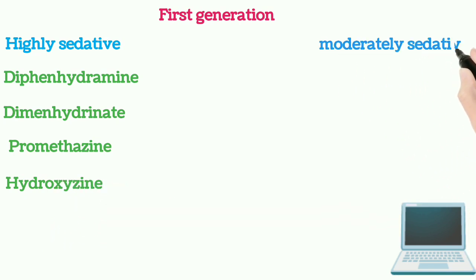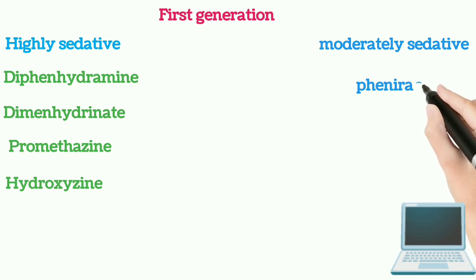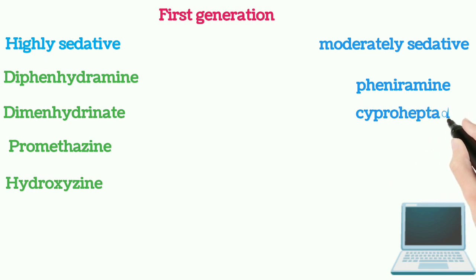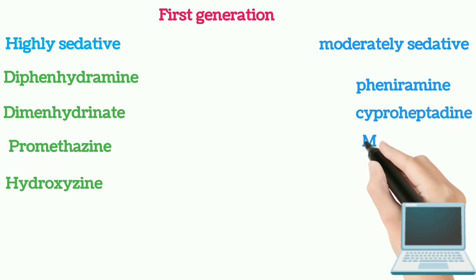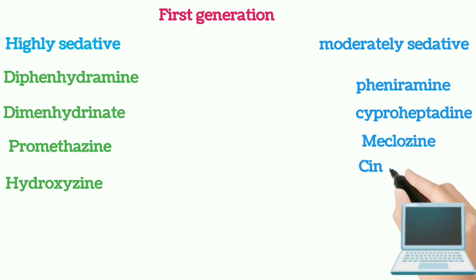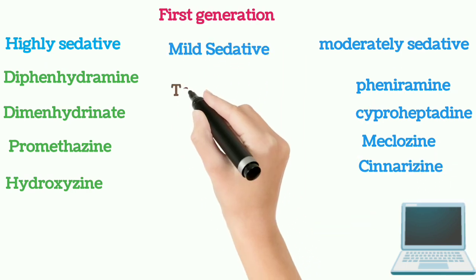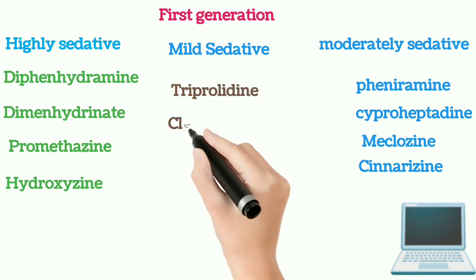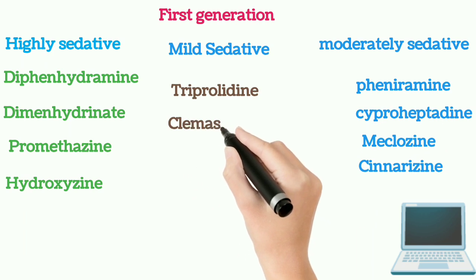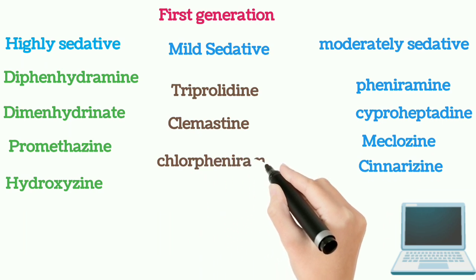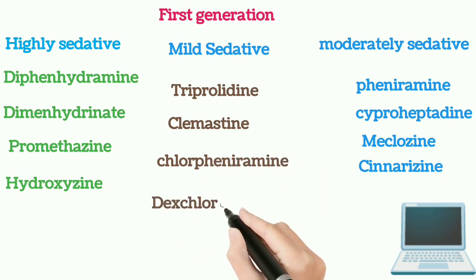1st generation moderately sedative antihistamines include pheniramine, cyproheptadine, meclizine, and cinnarizine. 1st generation mildly sedative antihistamines include triprolidine, clemastine, chlorpheniramine, and dexchlorpheniramine.